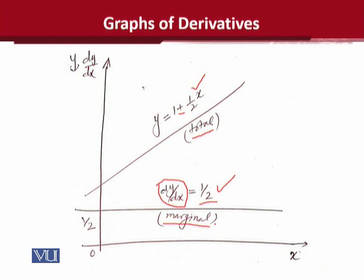In this case, it is a straight line parallel to the x-axis, and it is also called the marginal function. The interpretation of this straight line is that the slope of the actual function is constant — no matter which value of the independent variable we consider, the slope is 1 over 2 in all cases. This is verified using the graph of the derivative.